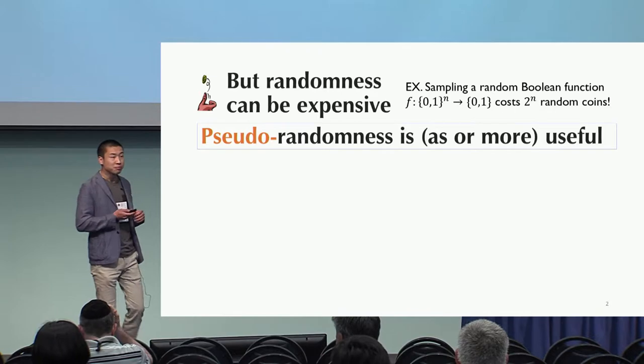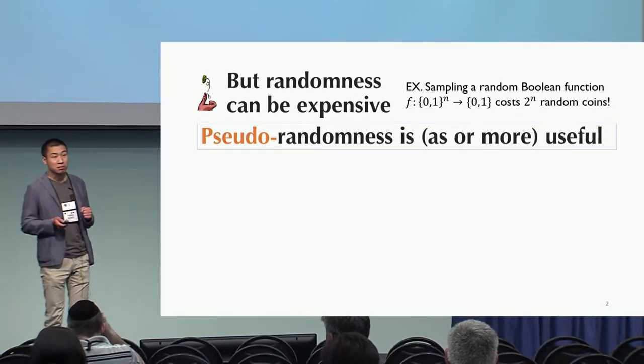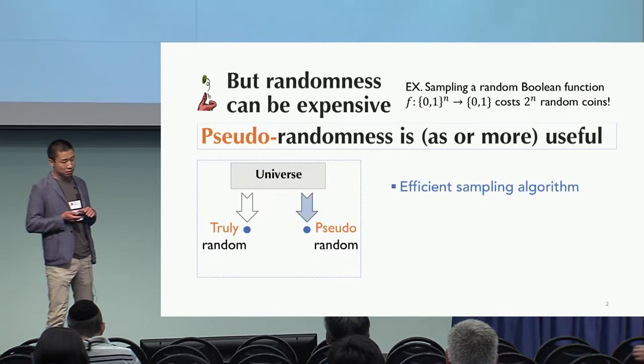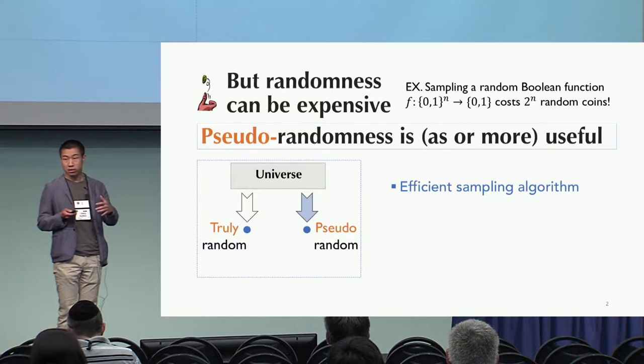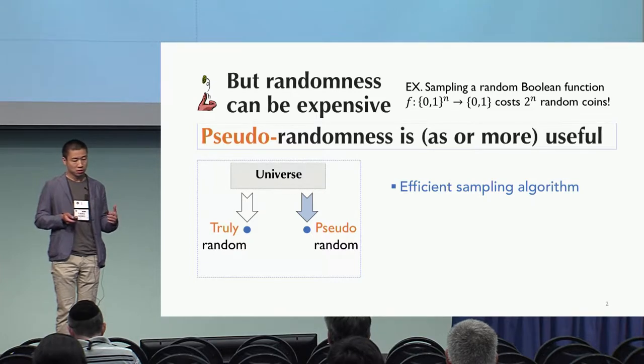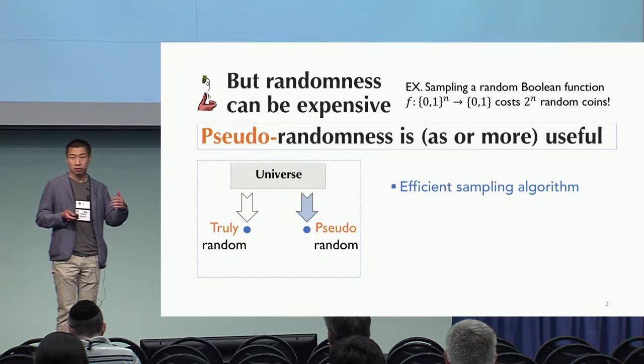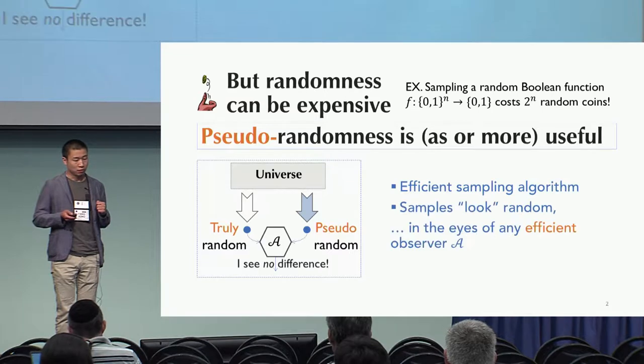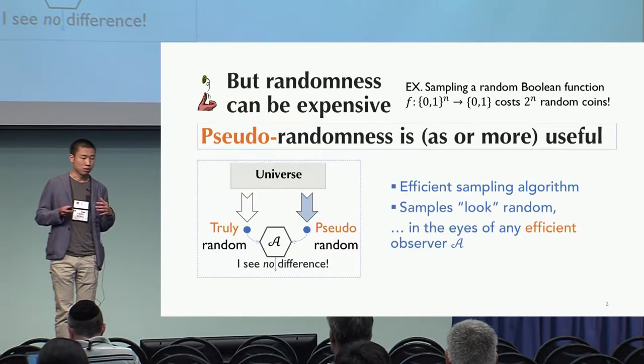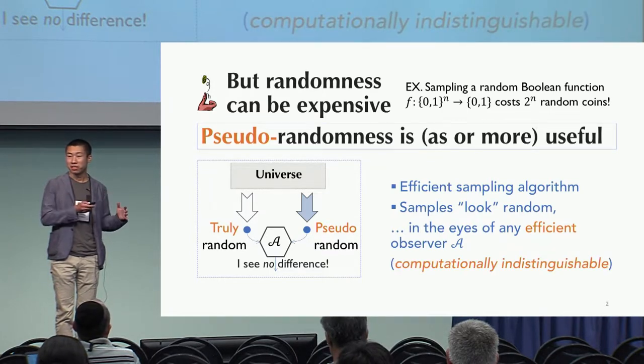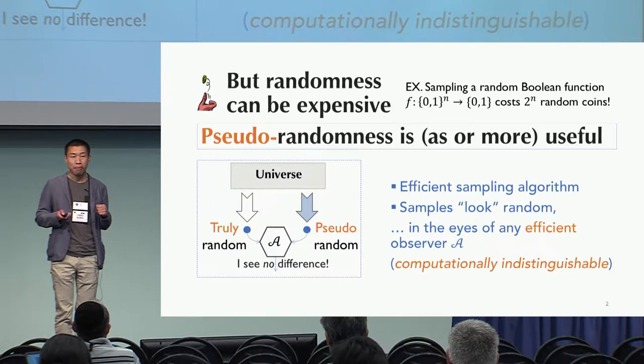But most of the time, a good approximation, which we call pseudorandomness, is as useful, if not more. So pseudorandomness basically means that we can efficiently sample from some universe such that this sample would just look no different from a sample according to some ideally random distribution, typically a uniform distribution over the universe. And for the most part of this talk, we're only going to be concerned with efficient observers. And you've realized this is just the familiar computational indistinguishability.